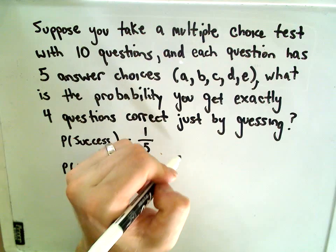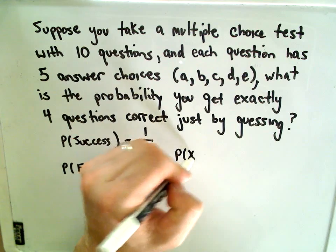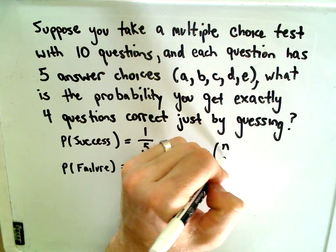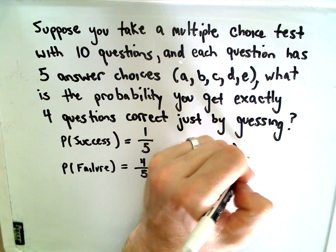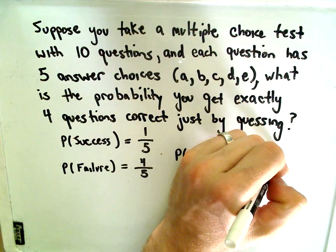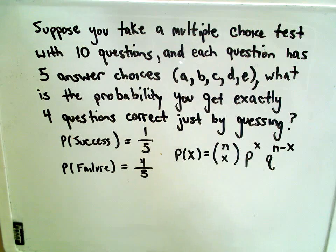Okay, so again, let me jot my formula down. So it says the probability of getting x successes is going to be n choose x, p to the x, and then q to the n minus x. So there's our formula.